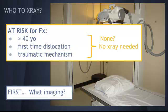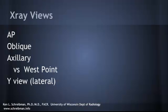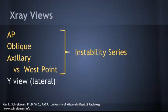Say we decide this is a first-time dislocation and we do want to get some imaging — what X-rays are we actually going to order, and what are they showing us? These are the typical views, and the first three can make up your instability series of the shoulder.